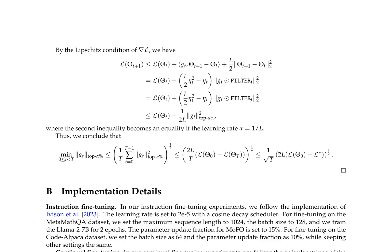MoFo is described as a novel optimization algorithm that dynamically adjusts the learning rate based on the norm of the gradient, with parameter alpha controlling the proportionality constant. This allows for adaptive learning rates that avoid large updates when gradients are large. The authors provide a mathematical derivation of MoFo and analyze its convergence properties, showing it converges to a local minimum under certain conditions. Comparisons with SGD and Adam demonstrate MoFo's effectiveness, and implementation details including hyperparameters and computational resources are provided for all experiments.